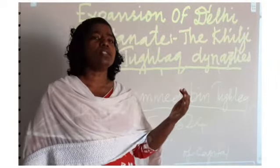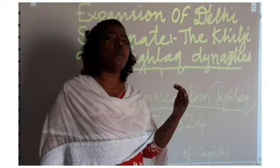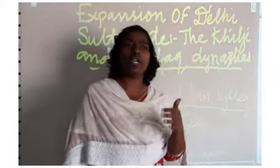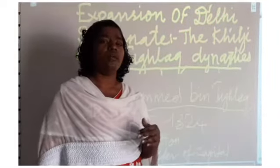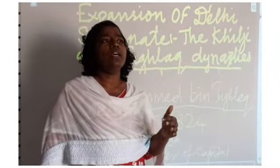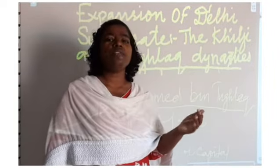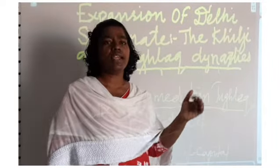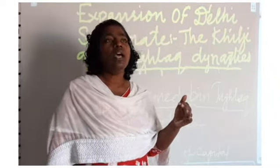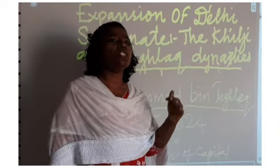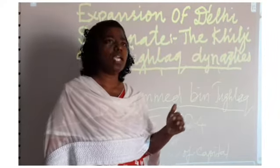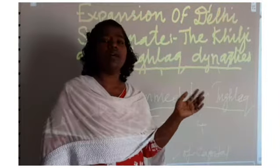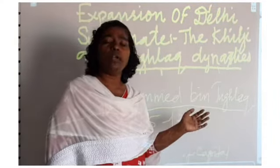The Timurids appointed Khizr Khan as viceroy to take control over India. After Khizr Khan left India, the power came into the hands of the Sayyid dynasty. After the Sayyid dynasty, the Lodi dynasty came to power. In the Lodi dynasty, Ibrahim Lodi was the famous ruler.